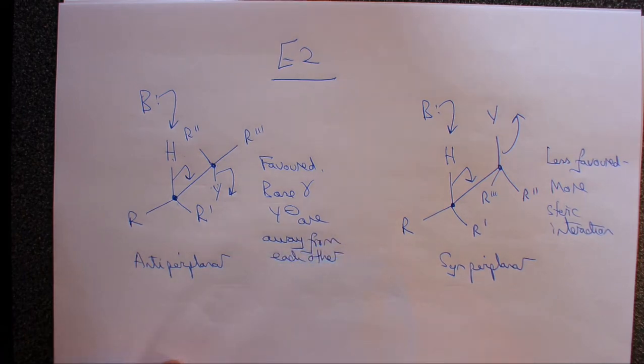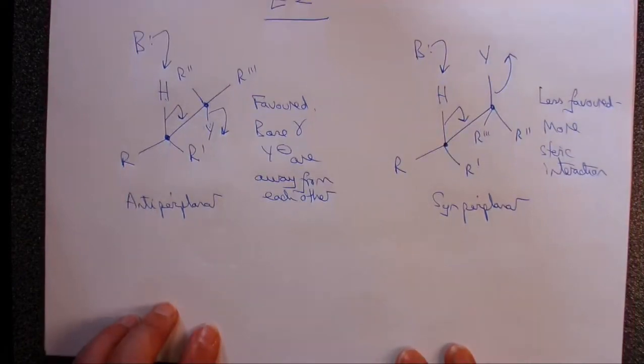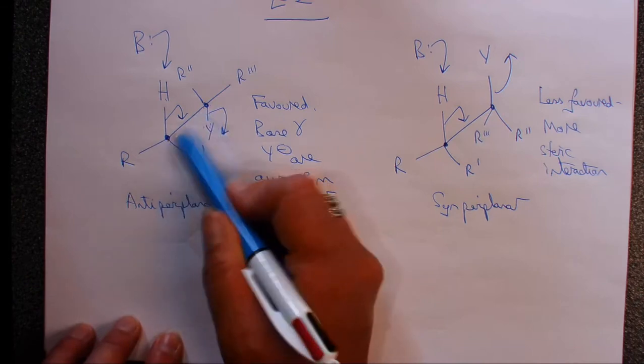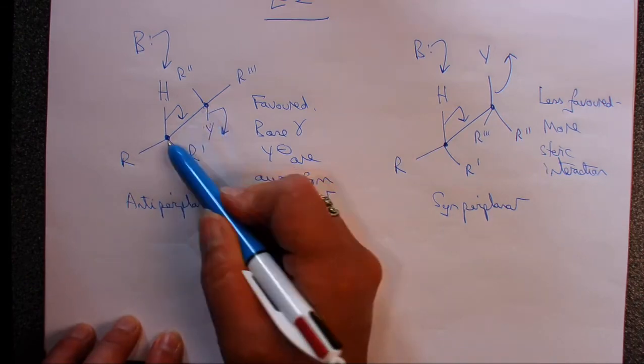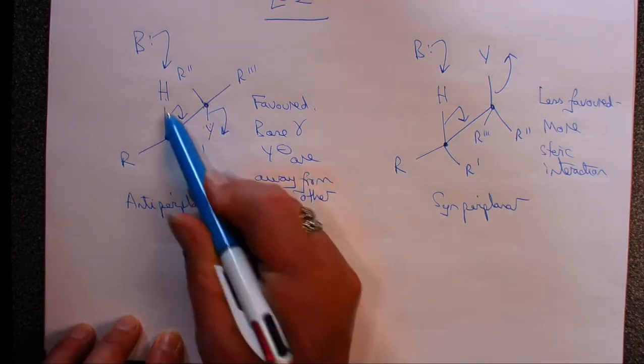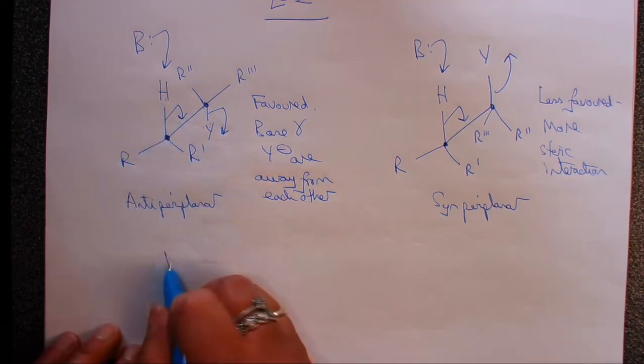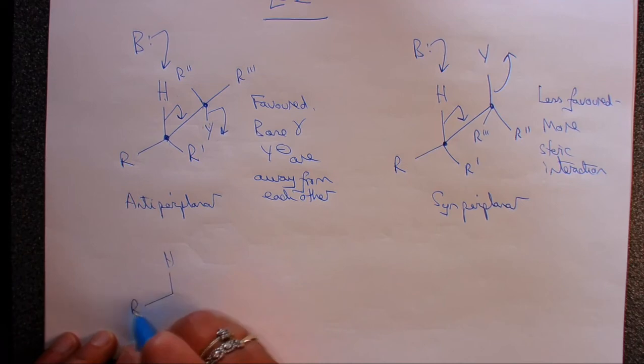So sometimes we draw these using Newman projections. Newman projection is just basically if we imagine looking along the bond, what do we see? So if we were to look along this bond, at the front of us we'd have hydrogen, R and R1.